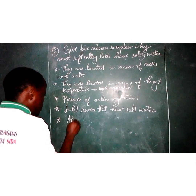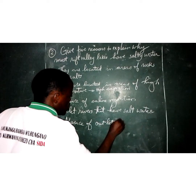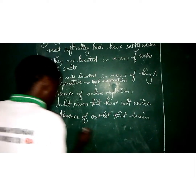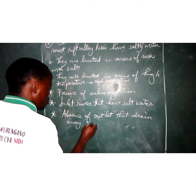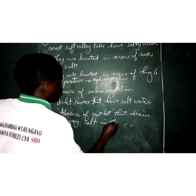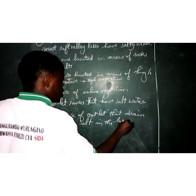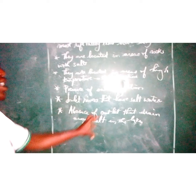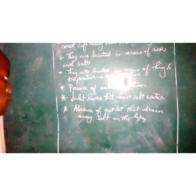Next: absence of outlets that drain away salts. Meaning that there are no rivers that can drain away the salt water from those lakes, and thus they become salty because of that.